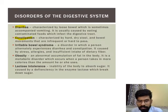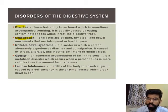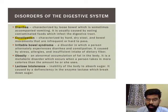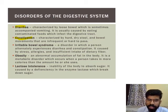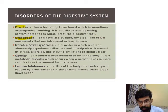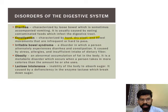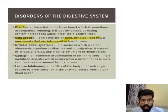The next disorder is constipation. Constipation occurs when feces — the undigested food — gets retained in the body, meaning the undigested food is hard and cannot move out, or it is hard to pass out. Constipation is characterized by hard, dry stool and infrequent bowel movements.